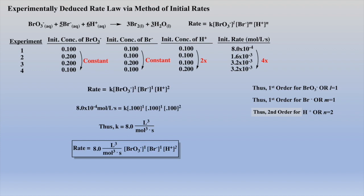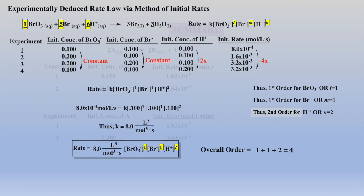One additional question you may be asked is: what is the overall order? Remember, you simply add the exponents, which represent the reaction order for each reactant, and the overall order for the reaction is determined. Again, it is worth mentioning that the exponents — the orders — were experimentally determined. L, M, and N were determined experimentally and were not obtained from stoichiometric coefficients, which are quite different within this example.